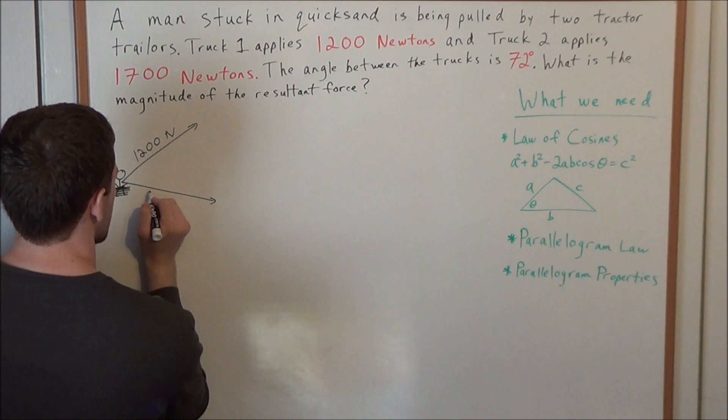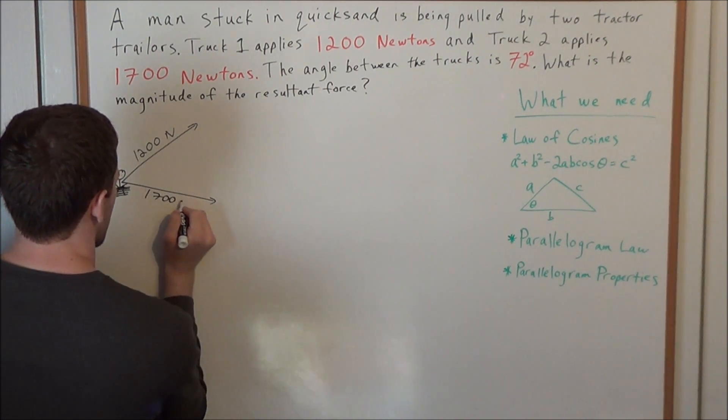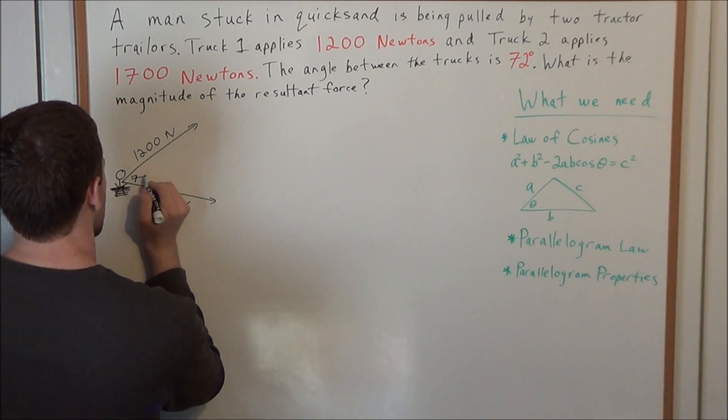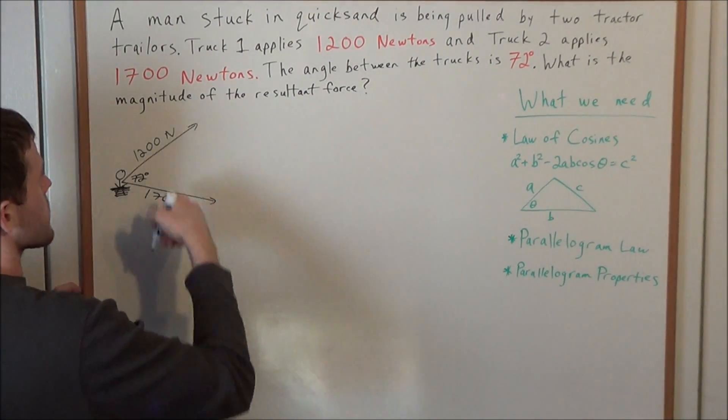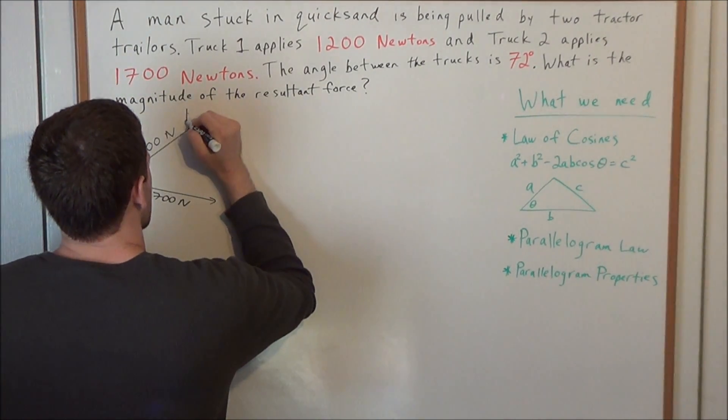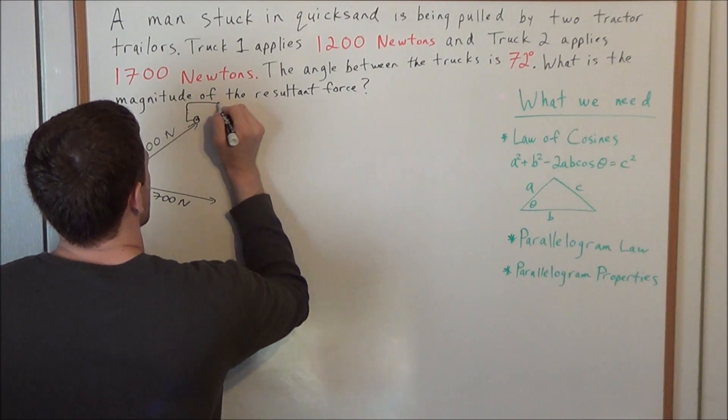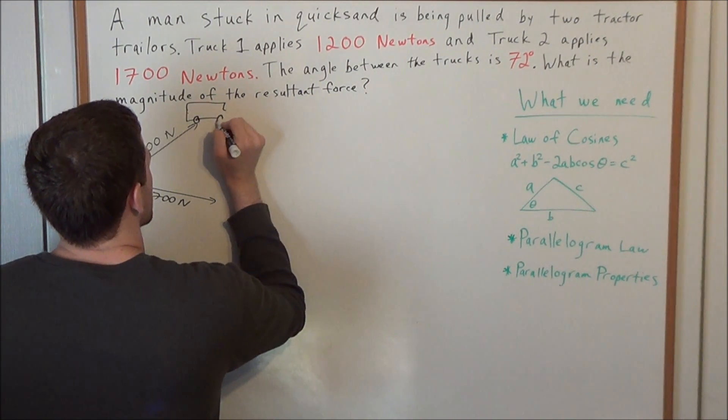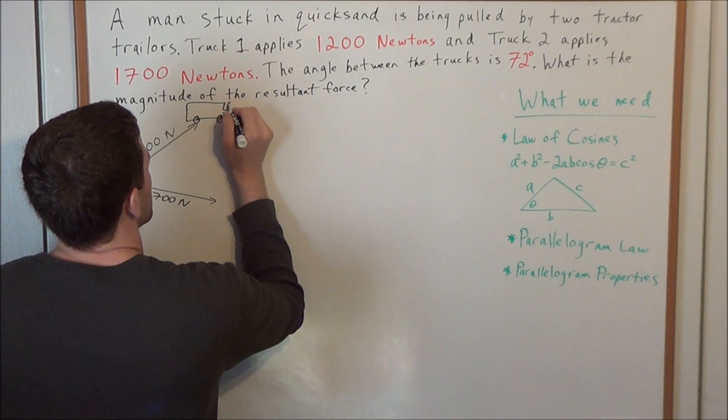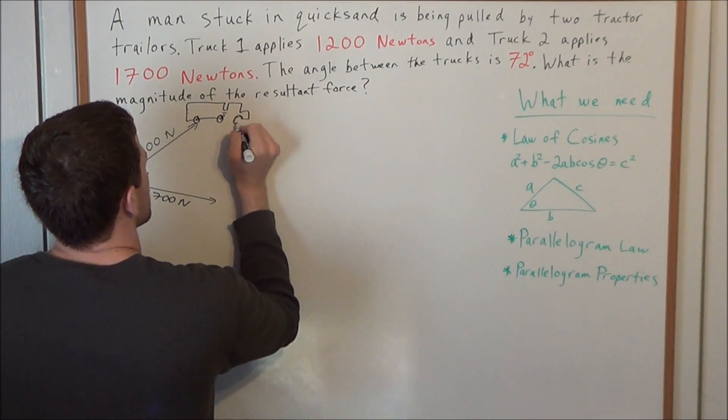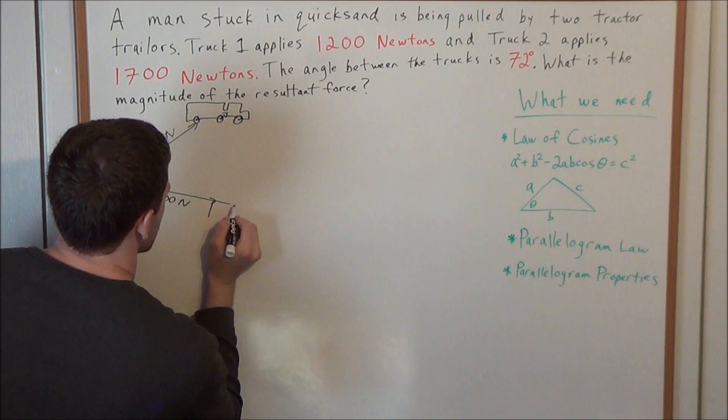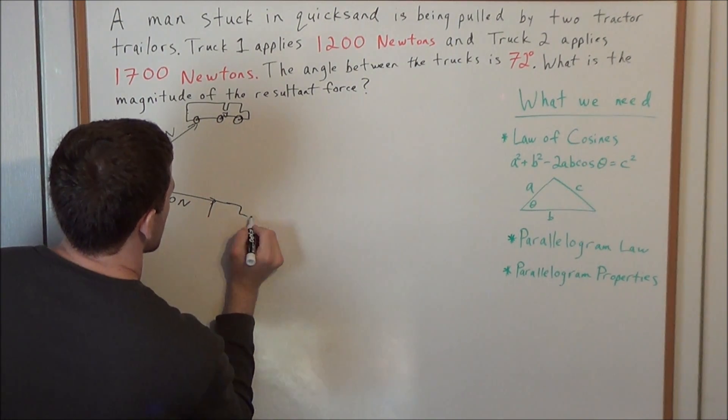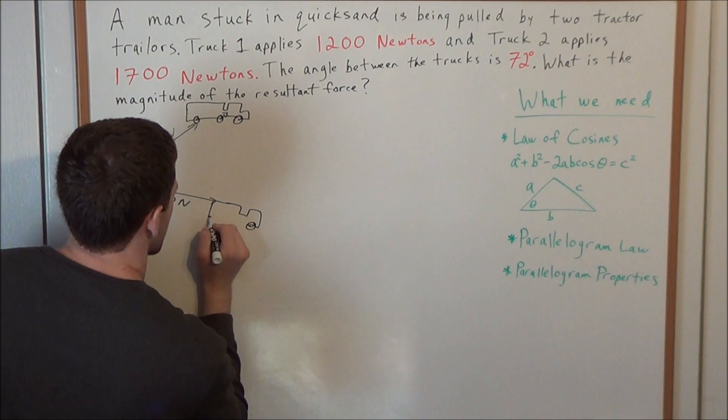The second truck is applying 1700 newtons of force, creating an angle of 72 degrees. So we have 1700 newtons of force, and there's a 72 degree angle between the two vectors. So let's get a little visual here. We have this truck here pulling this guy. And now the other truck is pulling him in this direction here.